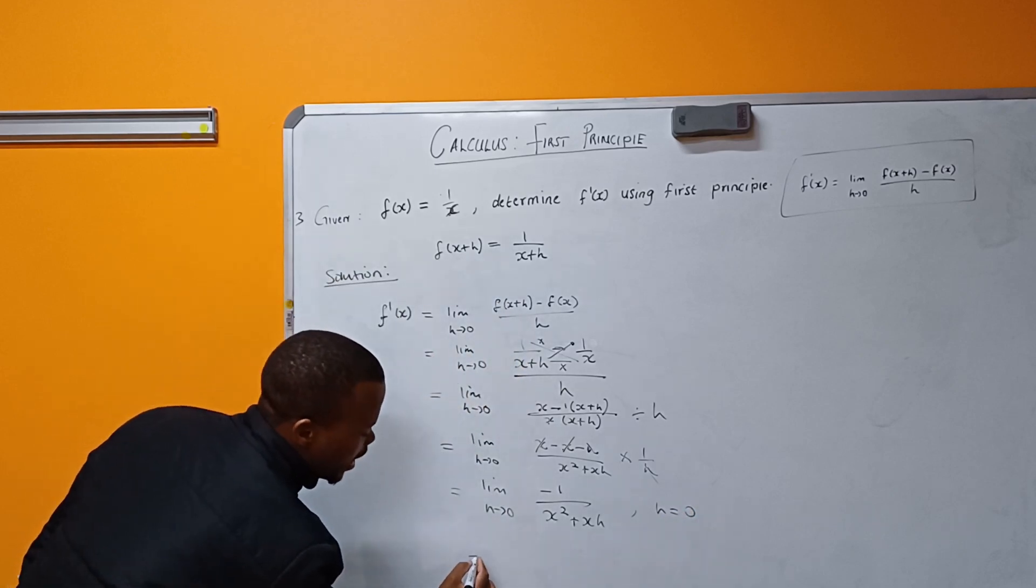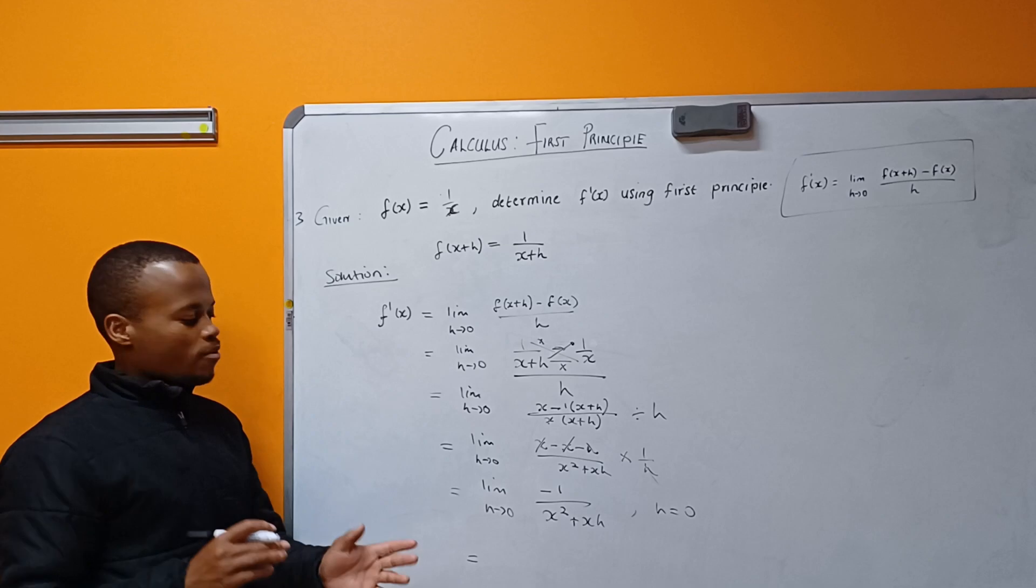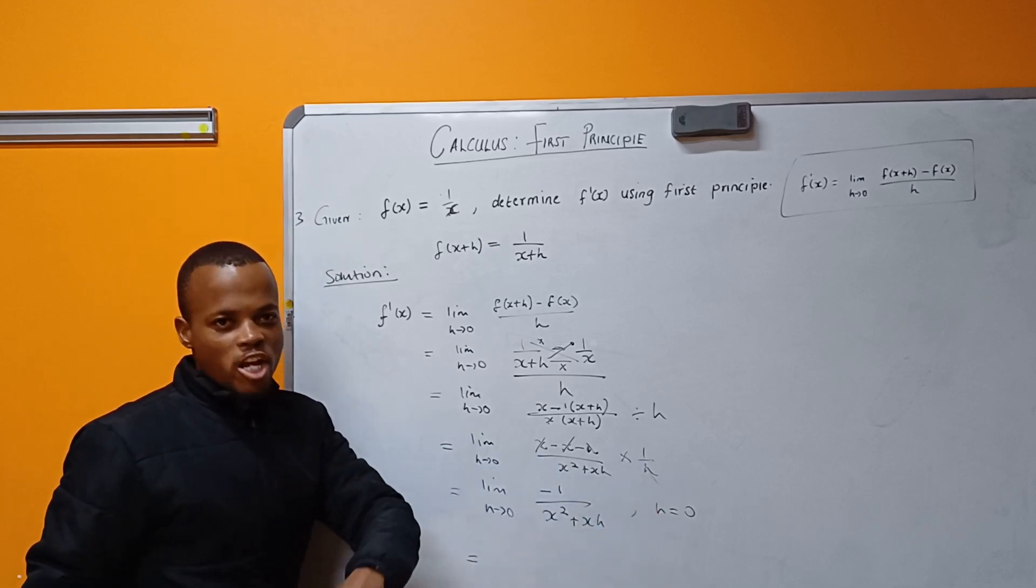Since there's nothing that I can do now, I have to let my h equal zero. When I let h equal zero, there is no necessity for me to continue writing limit as h tends to zero because I've already made h equal to zero.